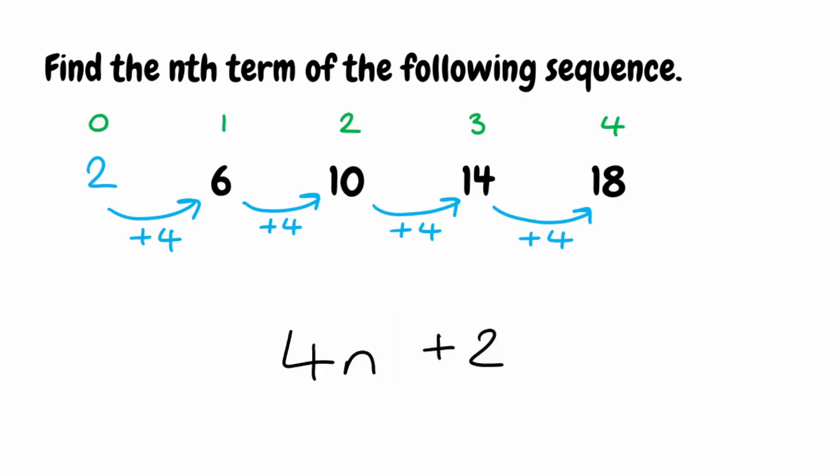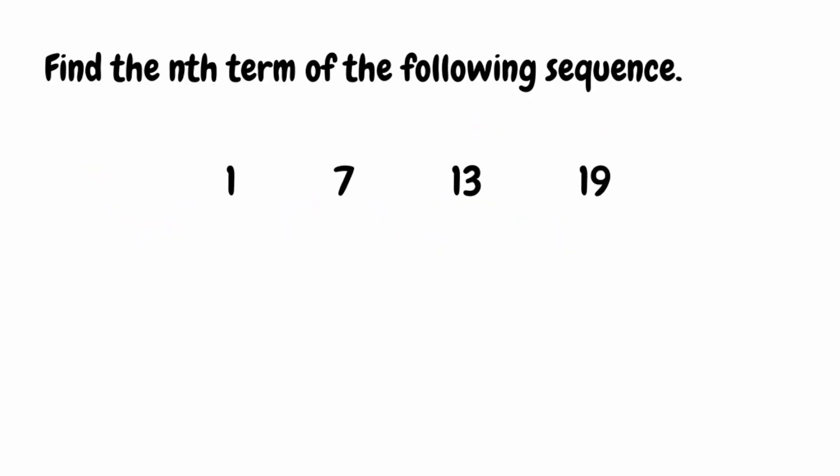Let's try this method with another example. We're looking for the nth term of the sequence again, and we've been given the first four terms. I'm going to write the term numbers up at the top. The first four terms of this sequence are 1, 7, 13, and 19.